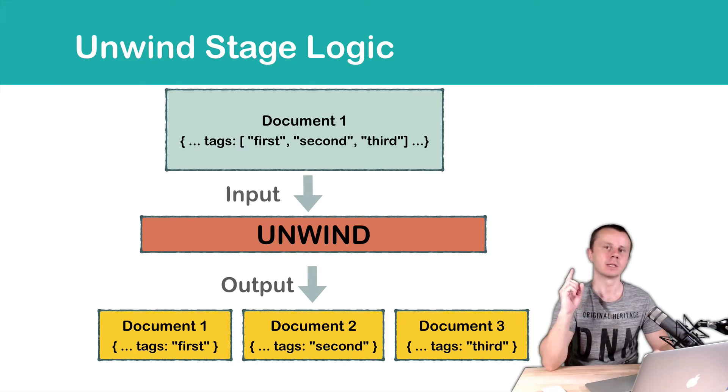Each document will have same fields as the input document. But one field will differ, and it is tags. Instead of array, tags field will contain string values in this example.